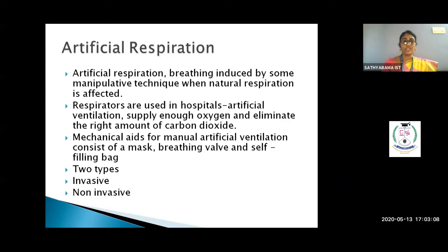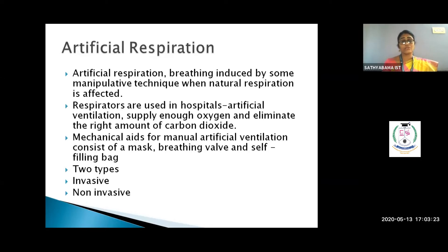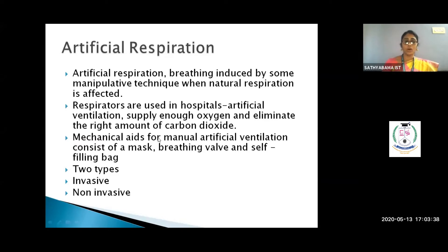There are two types of artificial respiration: invasive and non-invasive. Invasive involves intubation — a tube sent through the mouth directly into the lungs — or a tracheostomy, where a small cut is made on the trachea to insert a tube for longer-term ventilation. Non-invasive uses a mask with a breathing valve and a self-filling bag, which fills and empties with each breath.